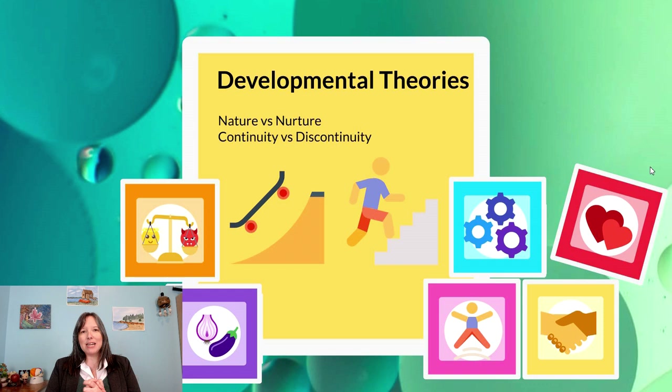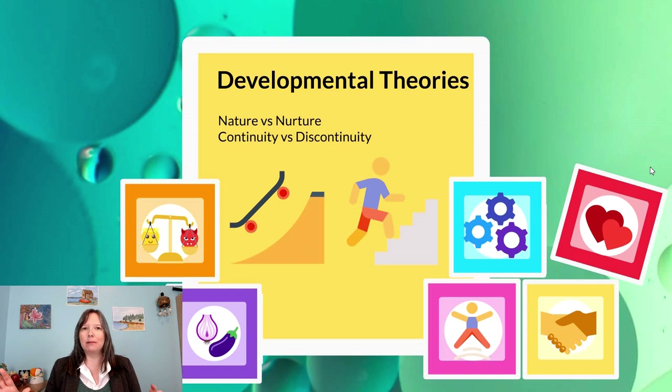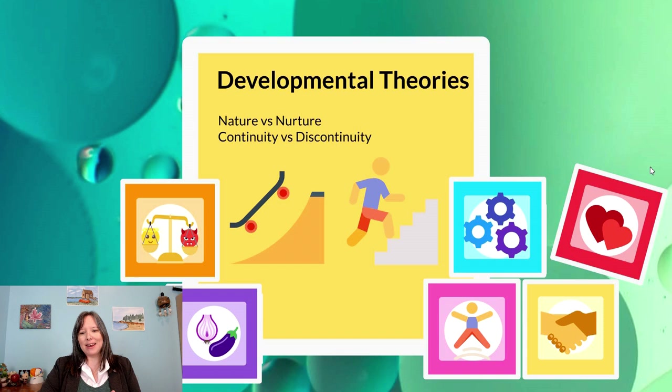Not all developmental psychologists agree on how these stages work. Some believe development is continuous — like puppies, which are just smaller versions of grown dogs, with smooth gradual development. Others believe stages are discrete steps, more like a butterfly or a frog, where we have an egg, a caterpillar, a chrysalis, and a butterfly stage, or a tadpole and frog stage. It's for you to decide if you think these are discrete or not at the end of the game.